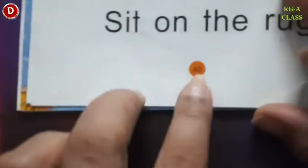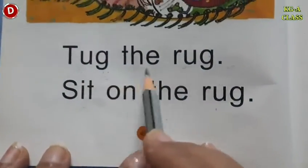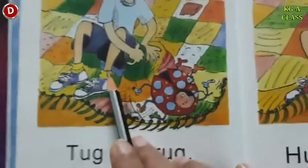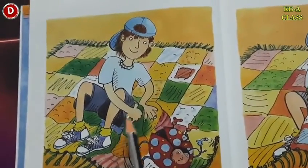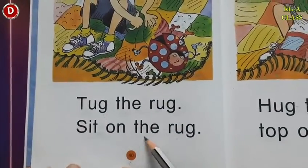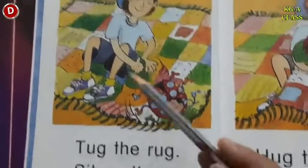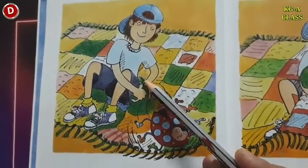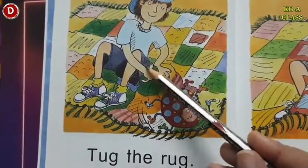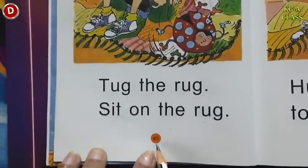Come to page number 40. The rug. Look here children — this is a boy. What is he asked to do? Sit on the rug. He has been asked to sit on the rug. Rug ke upar betho — sit on the rug. In this way, children, you have to read till page number 40 today.